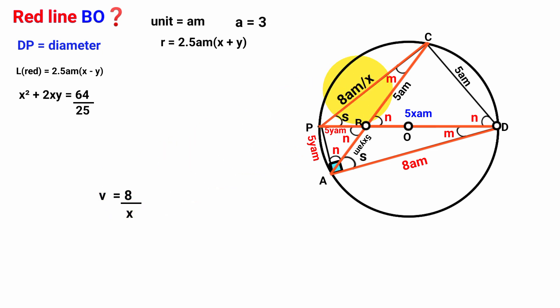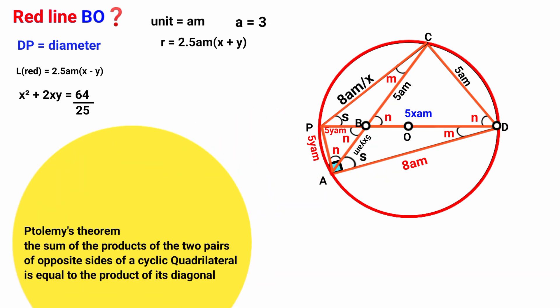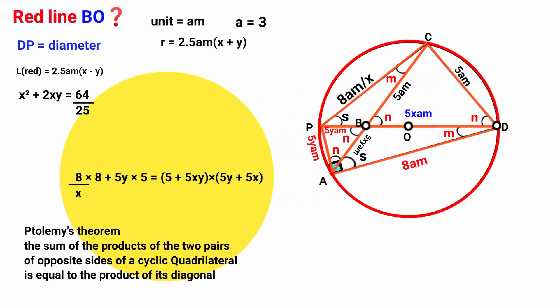Now look at this quadrilateral A, D, C, P — all its vertices are on the circumference of the circle. That is, it is a cyclic quadrilateral. Lines AC and DP are its diagonals. By Ptolemy's theorem, the sum of the products of the two pairs of opposite sides of a cyclic quadrilateral equals the product of its diagonals. So (8/X)(8) + (5Y)(5) equals (5 + 5XY)(5Y + 5X).